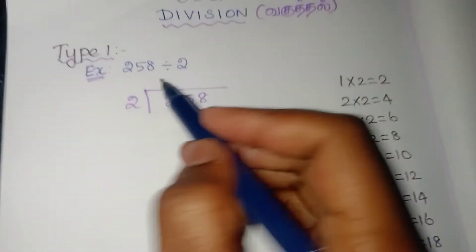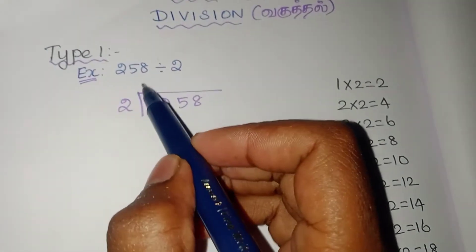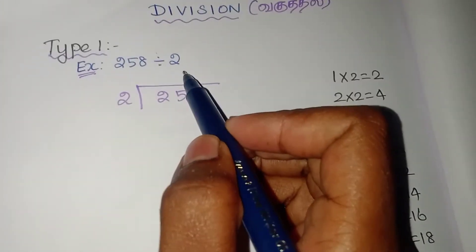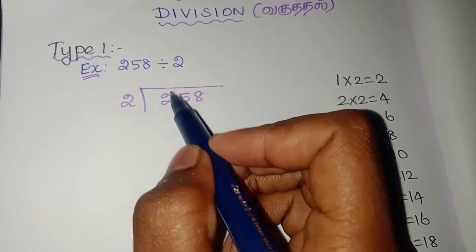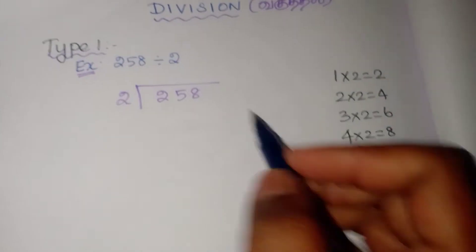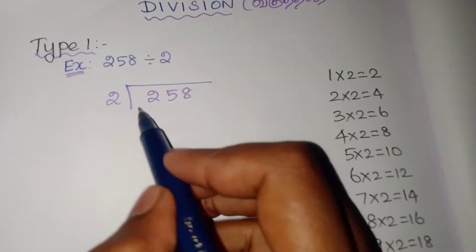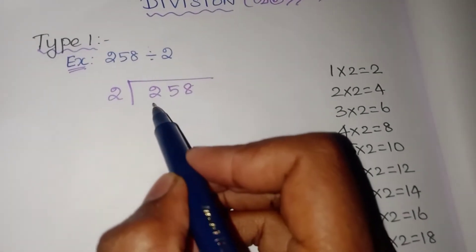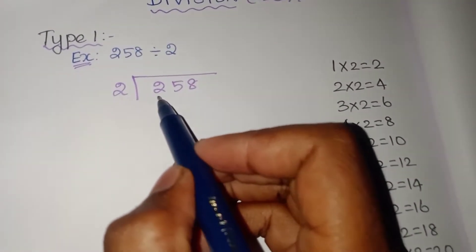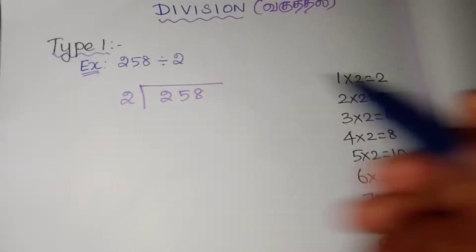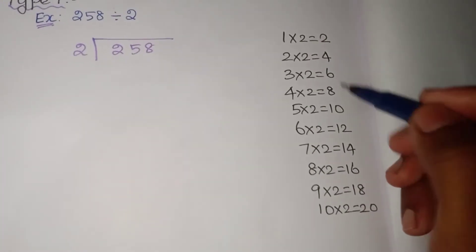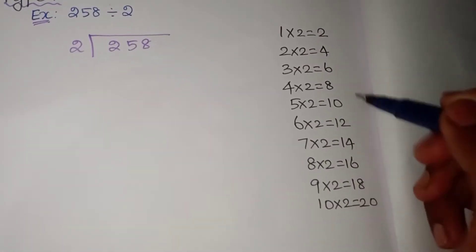For example, if we take 258 divided by 2. This is easy to divide. First, we have to take the first digit. For reference, you can write the second times table at the side.